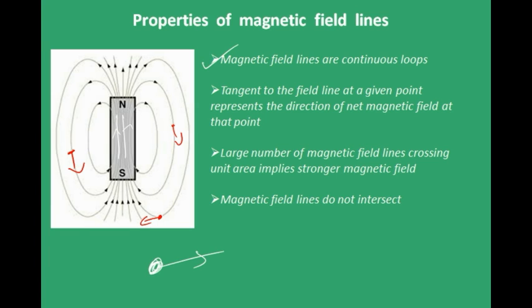A large number of magnetic field lines crossing unit area implies a stronger magnetic field — where lines are denser, the field is stronger. Magnetic field lines do not intersect, because at the point of intersection there would be two directions for the magnetic field, which is not possible. Note that field lines come out of the north pole and go into the south pole.